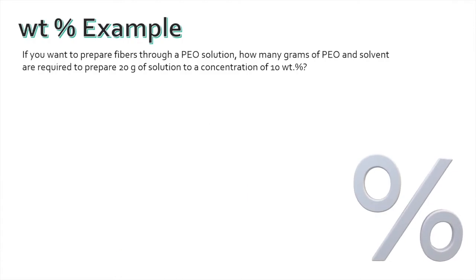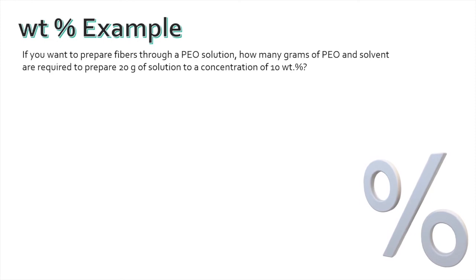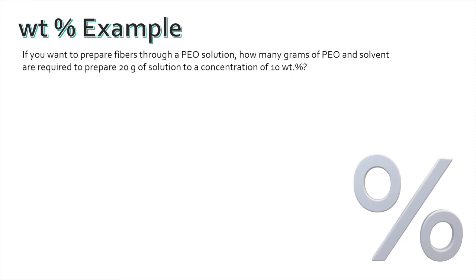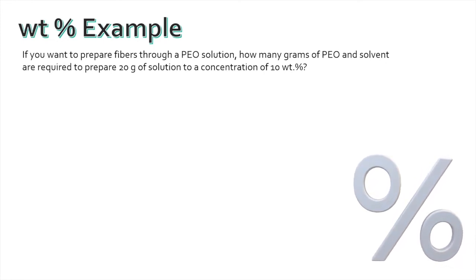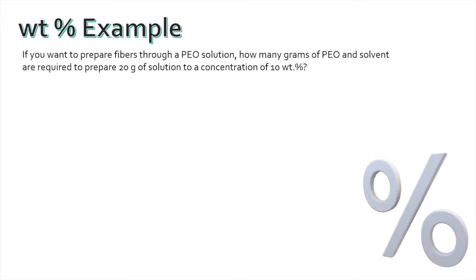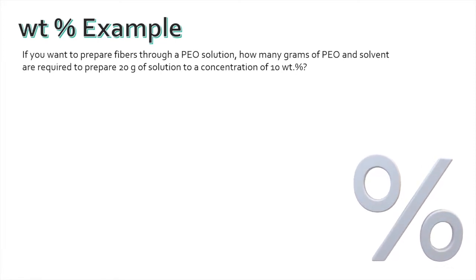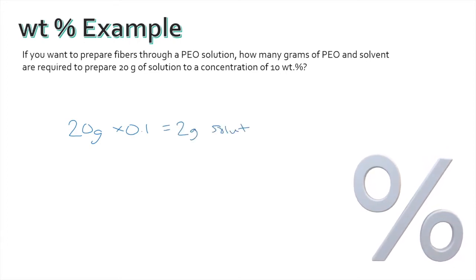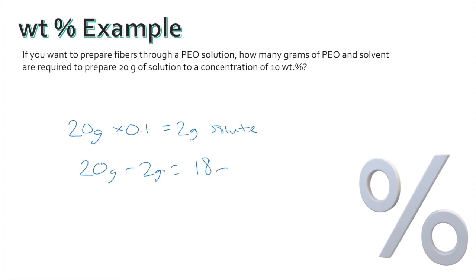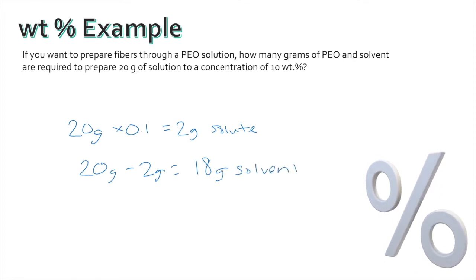Let's start with an example for weight percent concentrations, since this unit is widely used for the polymer solution preparation for fiber production. To solve these types of concentrations, you can multiply the percentage by the amount of solution to get the needed solute. The solvent would then be calculated by subtracting the solute from the solution. So, if you want to prepare fibers through a PEO solution, how many grams of PEO and solvent are required to prepare 20 grams of solution at a concentration of 10 weight percent? You would multiply those 20 grams by the 10 percent to give you 2 grams of solute. Then you would subtract the 2 from 20 to give you 18 grams of solvent.